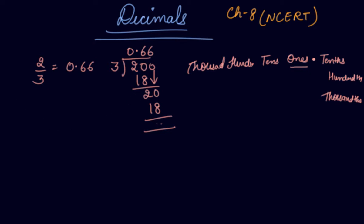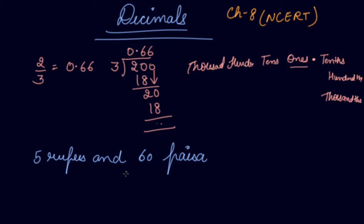Let's suppose you have 5 rupees and 60 paise. You cannot write it as 560. Here, 5 is the whole number and 60 is the fractional part. So 0 is a whole and 66 is a fractional part. These are your decimals — when you convert fractions into decimal numbers.